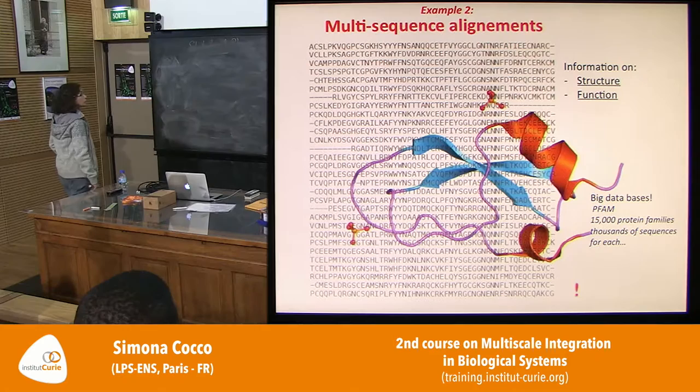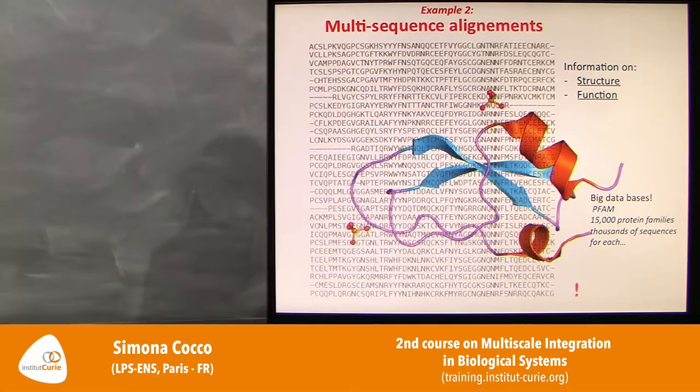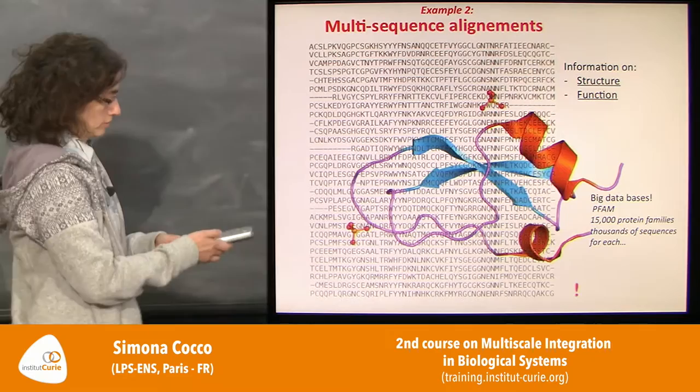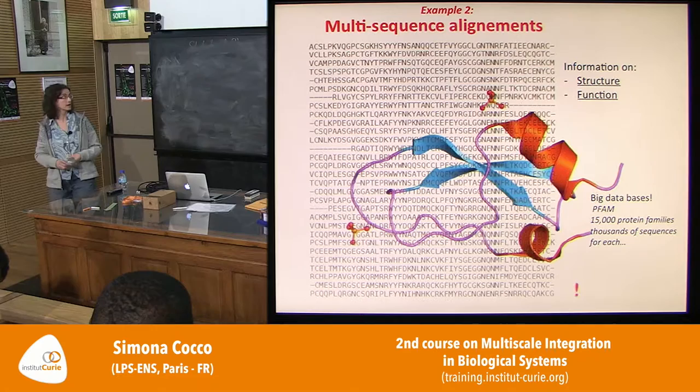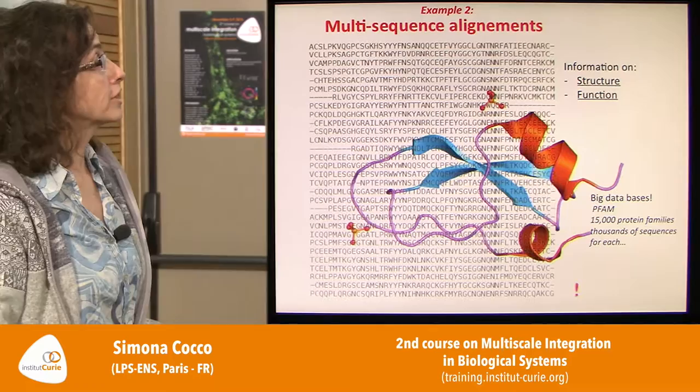There is a growing amount of data — for example, the PFAM database now contains 15,000 protein families, and for each of them you have thousands of sequences.